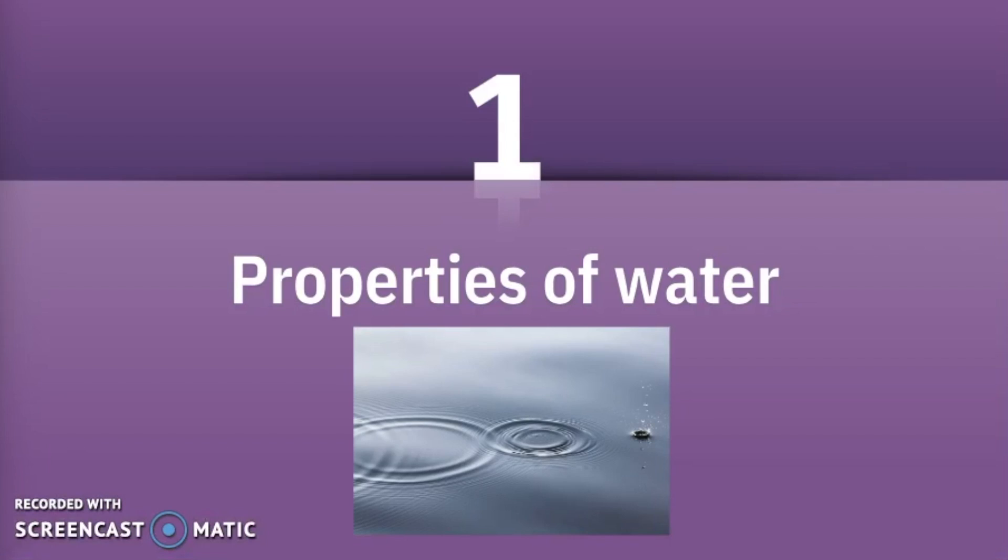First we're going to talk about properties of water. Living systems depend on properties of water because of its polarity and its hydrogen bonding, and we use water and nutrients in the synthesis of lots of new molecules all over our bodies and for all other organisms. For example in photosynthesis, carbon dioxide and water help us synthesize our organic compounds, and of course water and other nutrients are essential building blocks for new molecules.